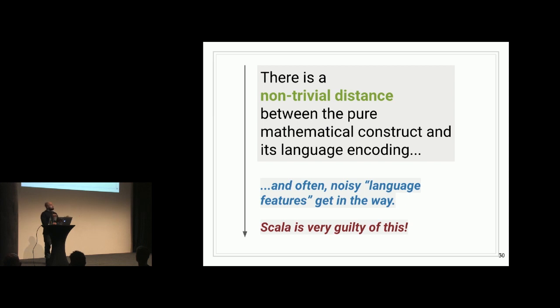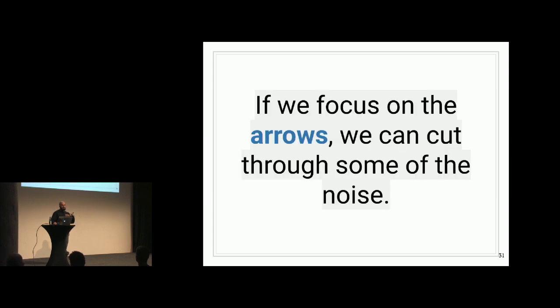So there's a non-trivial distance between the pure mathematical construct that we're talking about, and its language encoding. And a lot of the time, Scala's language features get in the way. And we've seen this with implicits and some of the implementation details of how these libraries are defined. We're just leveraging invented language features in Scala to be able to develop category-adjacent code. It's not really supported in the language first class. But if we focus on the arrows, we can cut through some of the noise, and that's really what I want to get into.